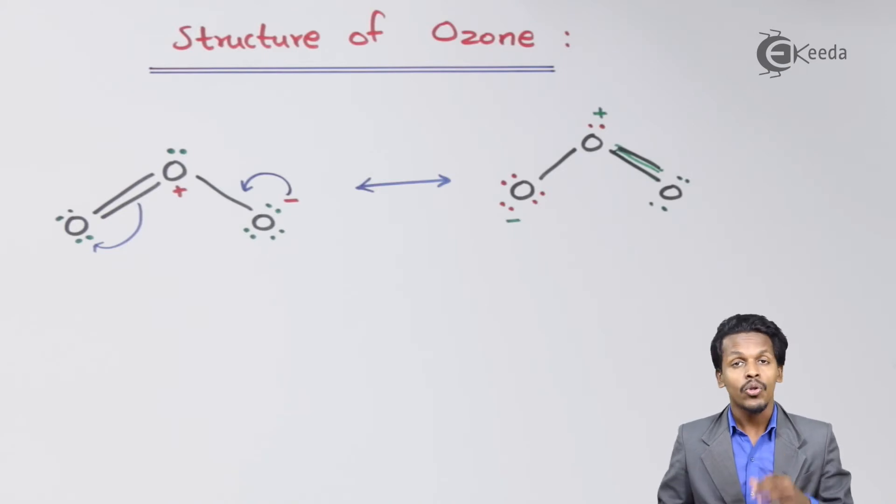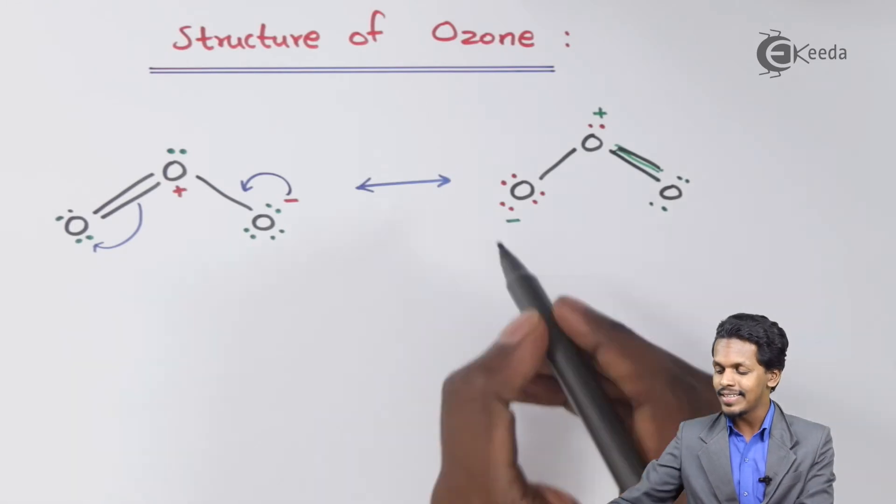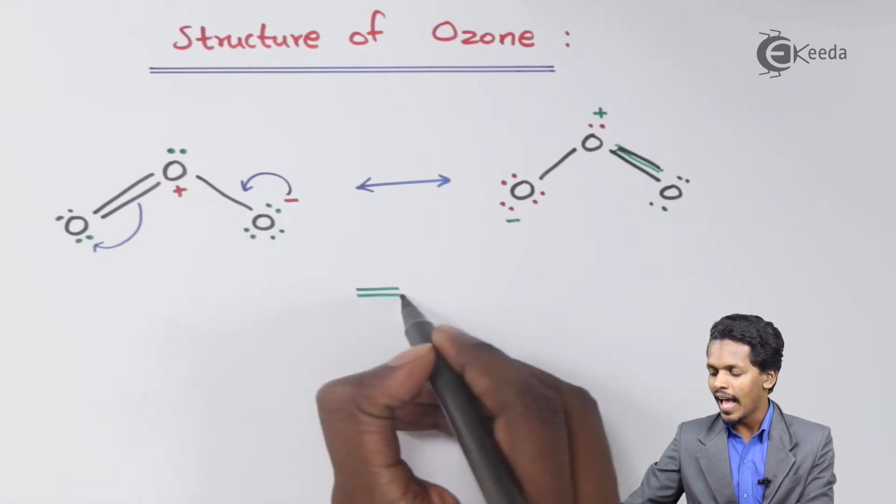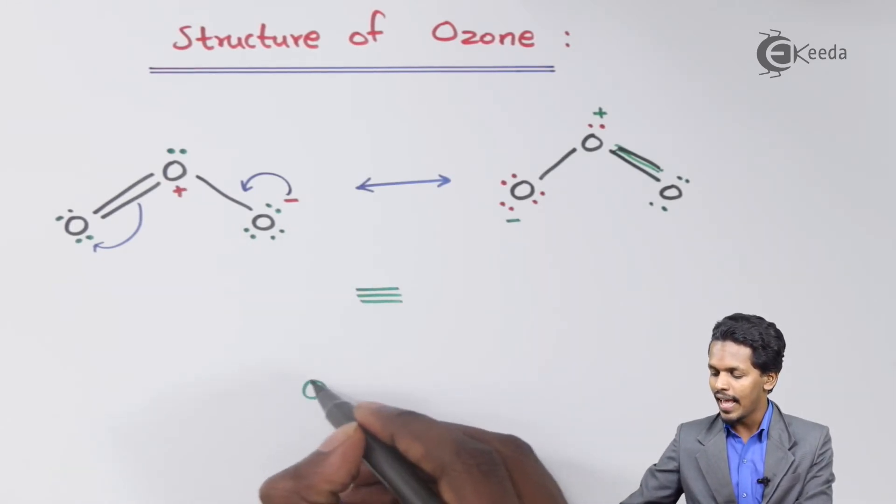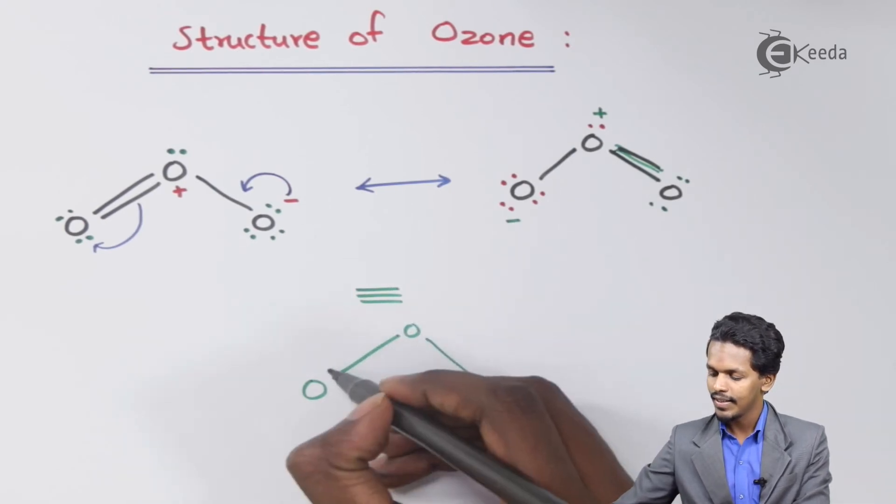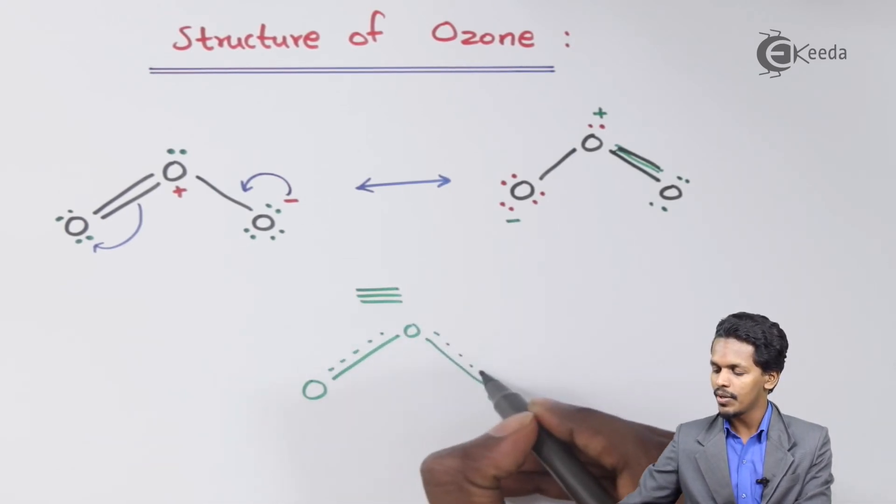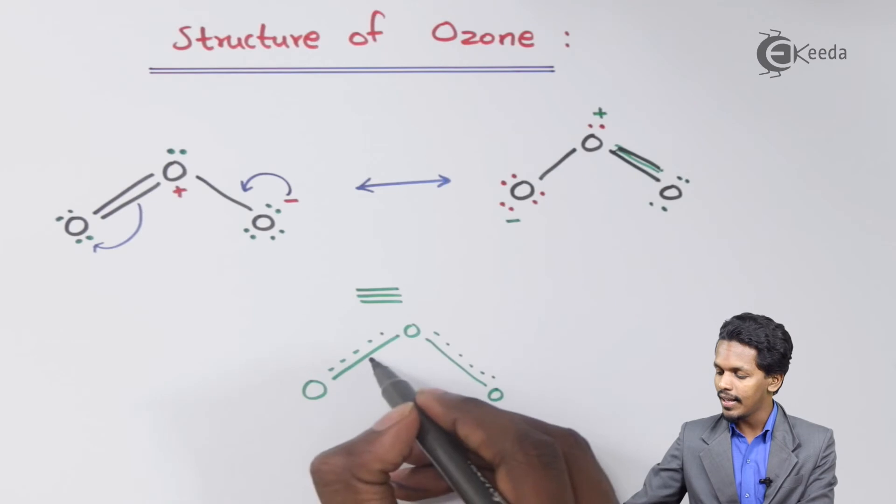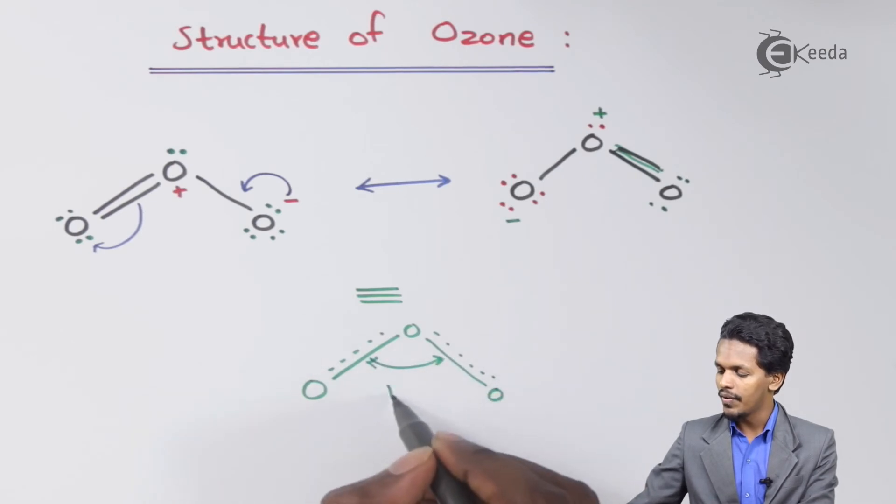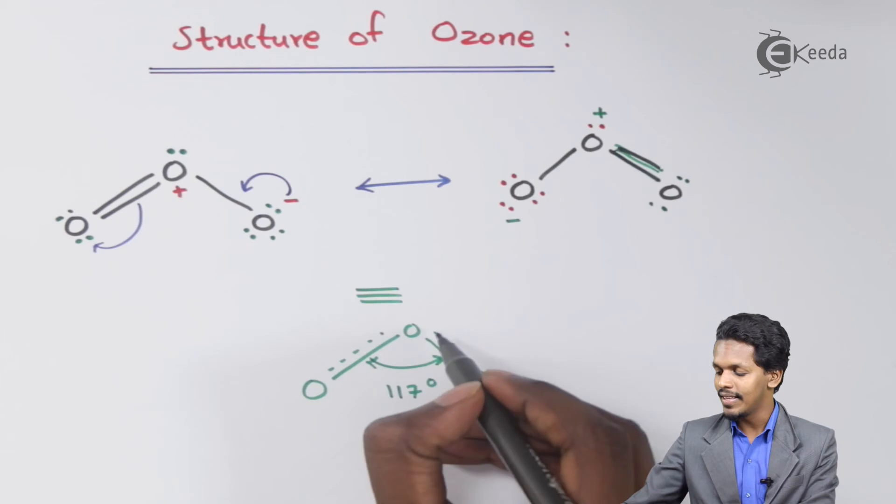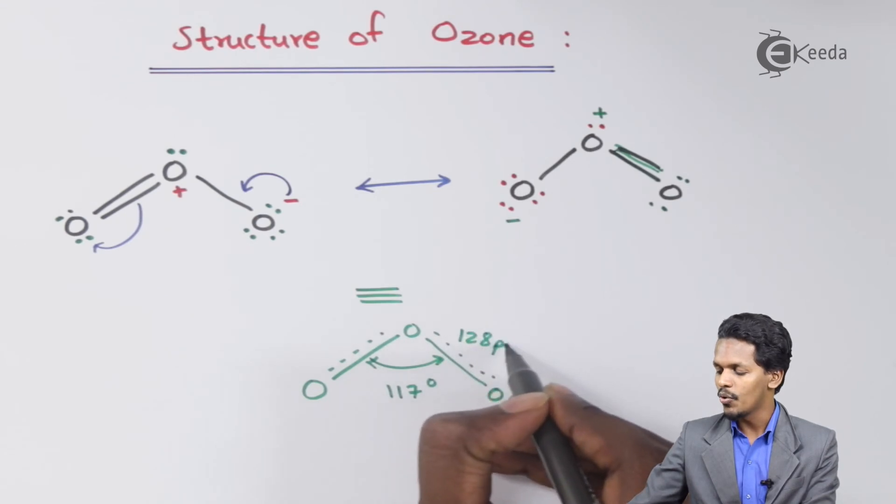But in actual practice, or through UV spectroscopy or infrared spectroscopy, it has also been determined that the ozone has a hybrid structure. So this is the hybrid structure that I am mentioning about, which is having a bond angle of 117 degree, and this bond length is of 128 picometer.